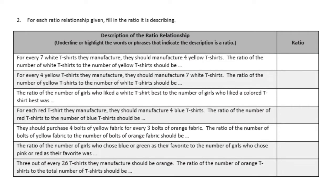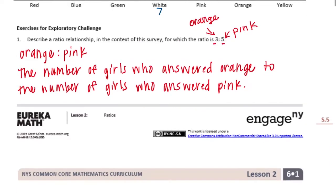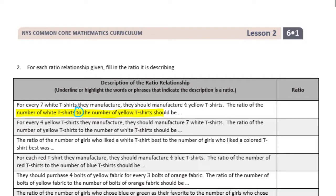Number 2. For each ratio relationship given, fill in the ratio it is describing. For every 7 white t-shirts they manufacture, they should manufacture 4 yellow shirts. The ratio of the number of white t-shirts to the number of yellow t-shirts should be — I'll highlight 'number of white shirts to the number of yellow t-shirts' because the word 'to' tells us it's a ratio. White must be first: white is 7, yellow is 4. So our ratio is 7 to 4.